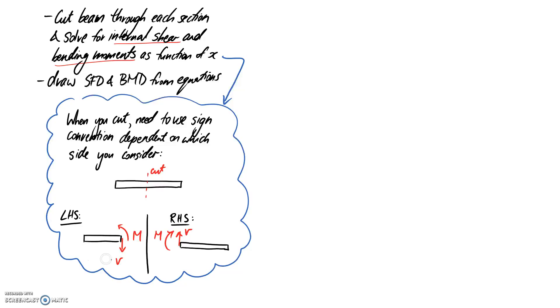If I choose to work on the left-hand side, I need to make sure that I draw the shear force downwards at the cut and the moment anti-clockwise. If you choose to take the right-hand side, you need to draw the shear force upwards and the moment clockwise. This is going to make sure that you get the signs correct when you draw the diagrams.